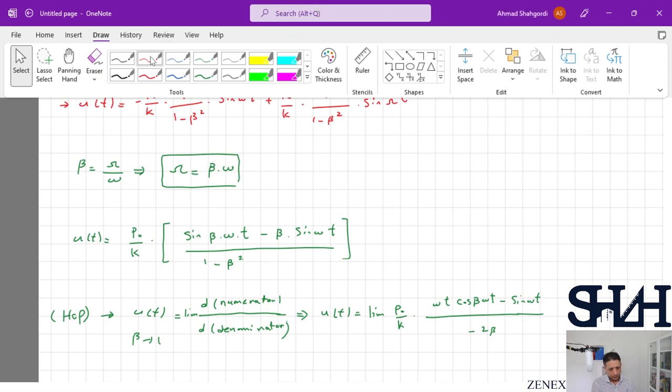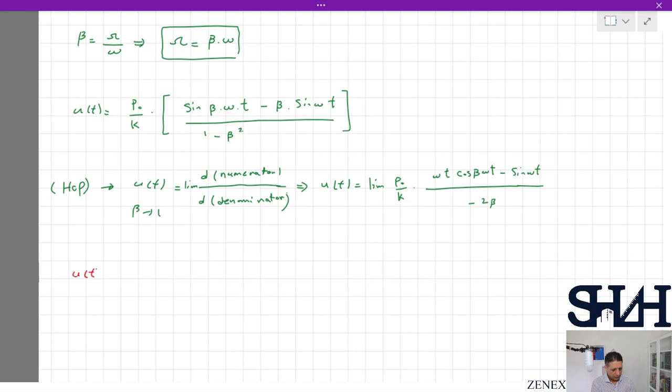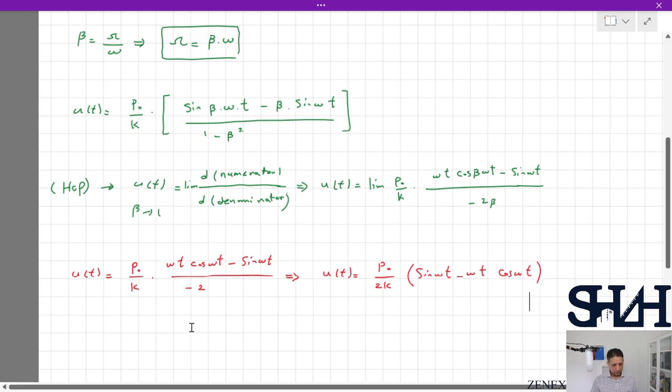And from here we can substitute beta as one and we get the results. So u(t) will be p₀ over k times ωₙt·cos(ωₙt) minus sin(ωₙt) divided by minus 2. Or we can write it down this way: u(t) equals p₀ divided by 2k times (sin(ωₙt) minus ωₙt·cos(ωₙt)). This is the solution when we have the resonance system. Now let's start to write down the equation for this system in MATLAB.